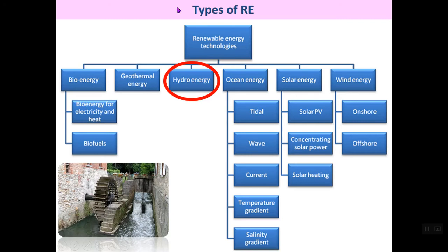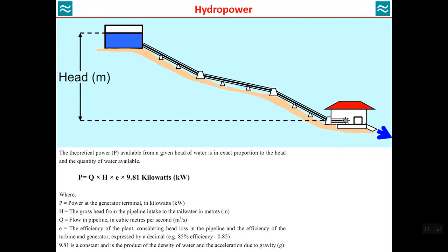The third renewable energy resource is hydro energy. There is some discussion about whether hydro energy should be included within renewable energy technologies. The general conclusion is that large hydropower plants are not included in renewable energy, but small hydro plants and specialized hydro plants are within the renewable energy sector.